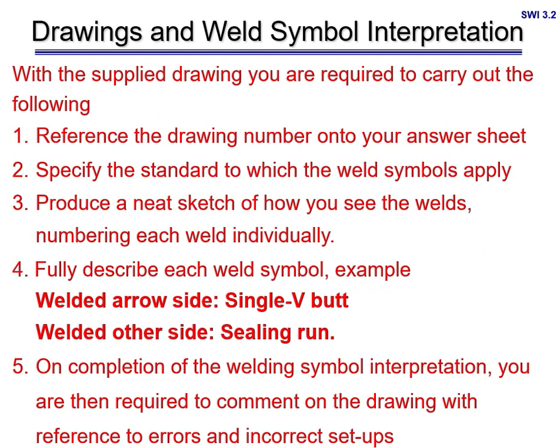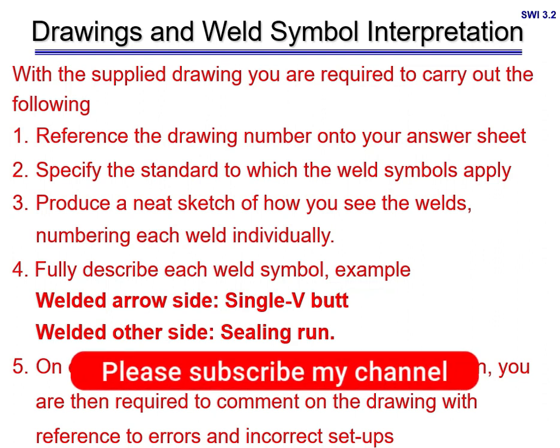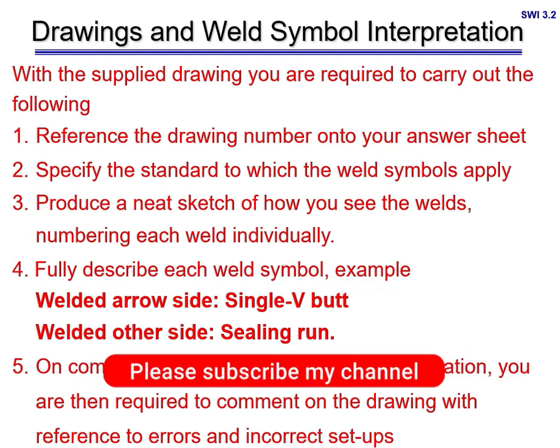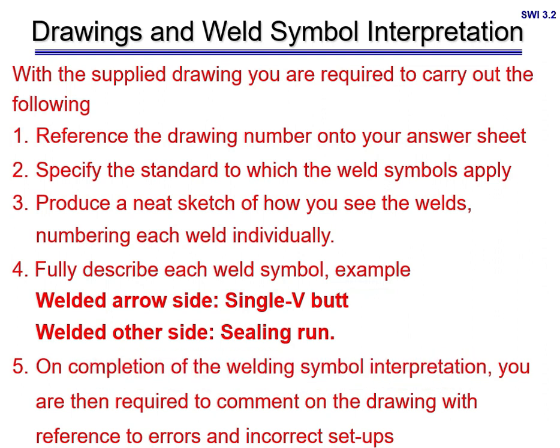You have to write the applicable standard in the answer sheet. You must produce a neat sketch of how you see each weld, numbering each weld individually. Fully describe each weld symbol — for example: 'welded arrow side, single V-butt; welded other side, single sealing run.' On completion of the welding symbol interpretation, you are then required to comment on the drawing with reference to errors and incorrect setup, writing any comments in the answer sheet for the particular weld symbols.